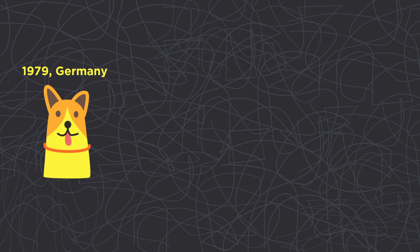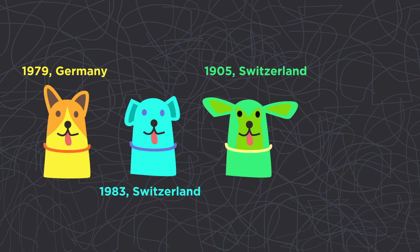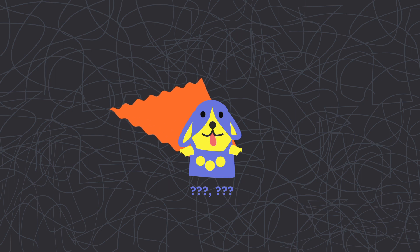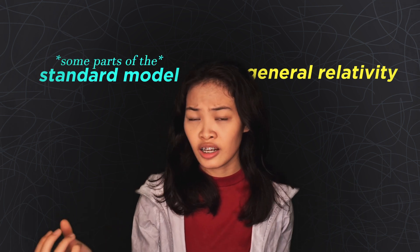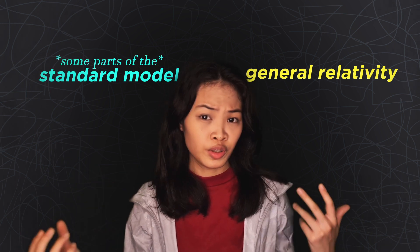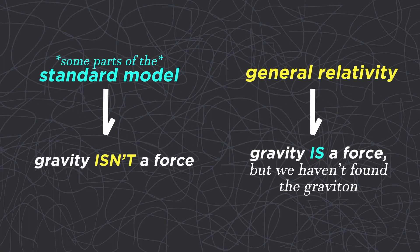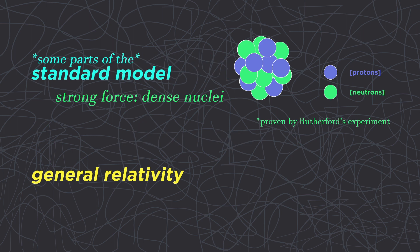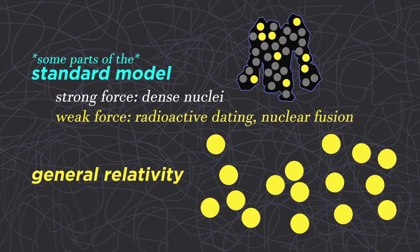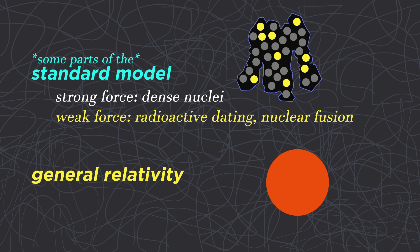We've detected all the particles except for one — surprise, surprise — it's the graviton. Before, I've mentioned two theories: general relativity and a portion of the standard model of physics. A theory of the big and a theory of the small. We can't just choose one theory and get rid of the other because both theories work. If not, our atoms won't have dense nuclei composed of like charges that are supposed to repel each other.